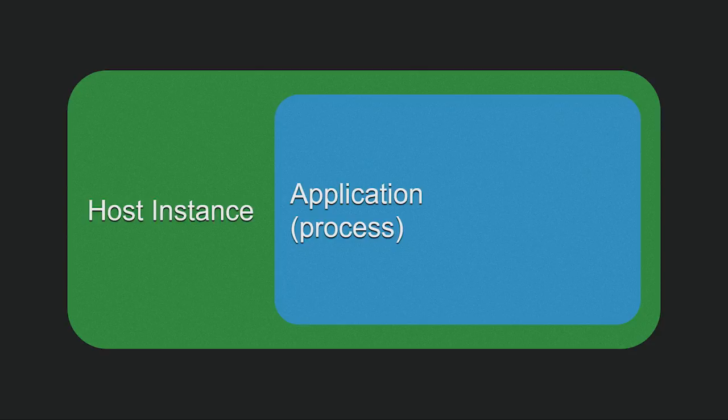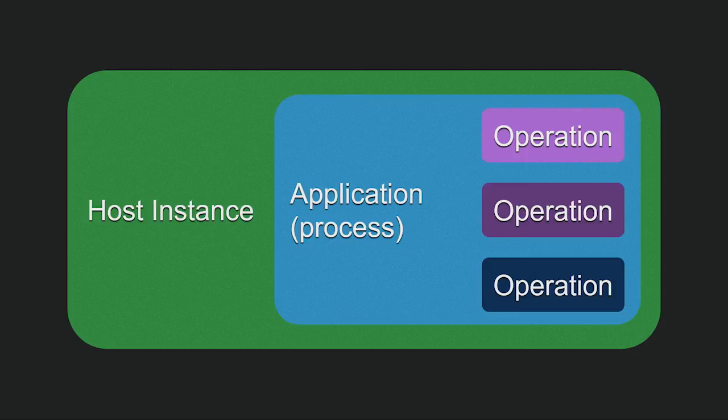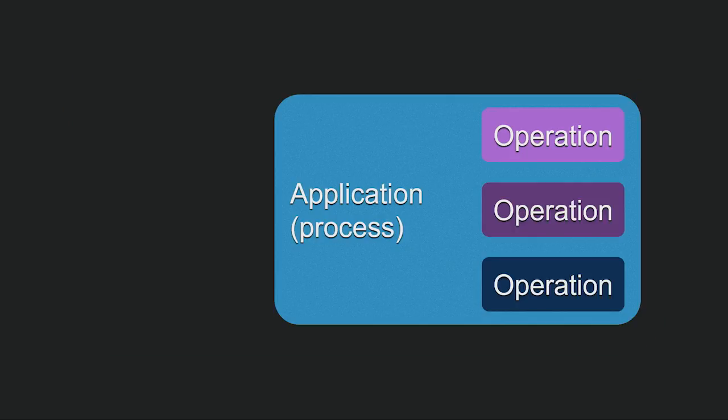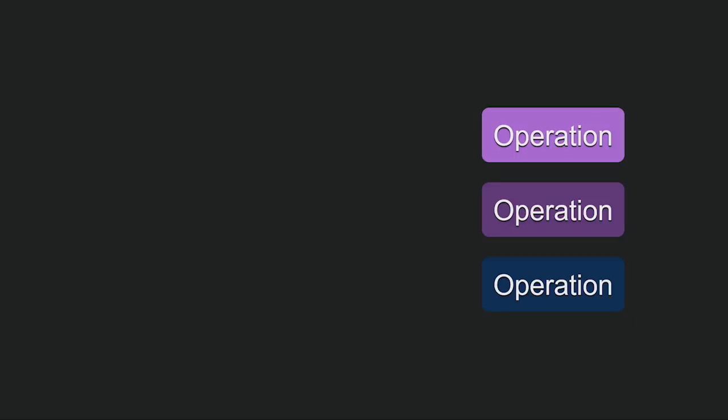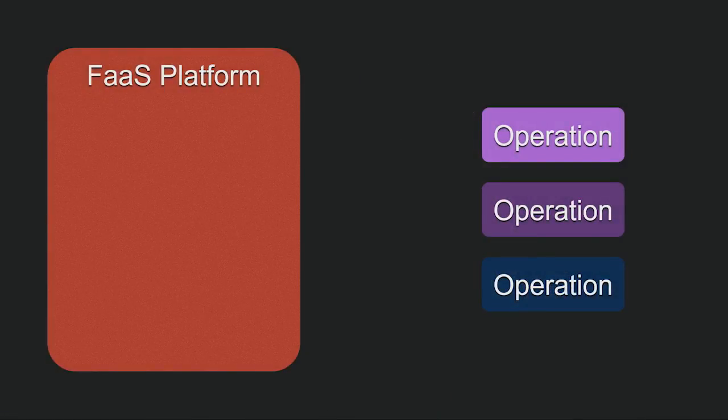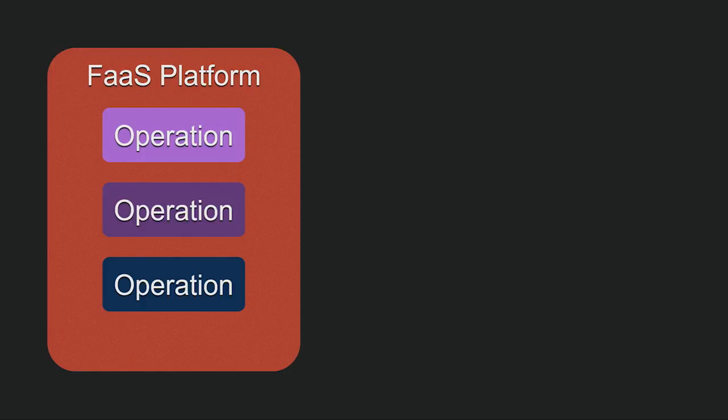When we traditionally deploy server-side software, we start with a host instance — that's a container or a virtual machine host. Then we deploy an application within our host, and this application is typically an operating system process that usually contains code for several different operations. FaaS changes this type of deployment. First, we strip away the host instance and the application process from our model. Instead, we focus on just the operations or functions that express our application's logic. We have a vendor FaaS platform, and we deploy our functions to it as very basic code units. For JavaScript or Python, these are just bits of source code zipped up. For Java, Scala, or Clojure, we put those in a simple jar file.